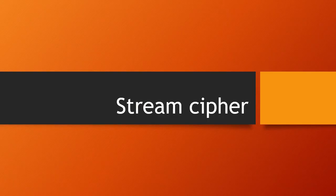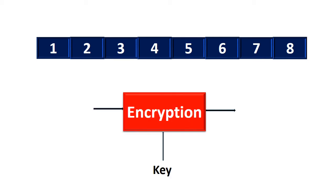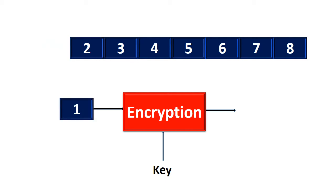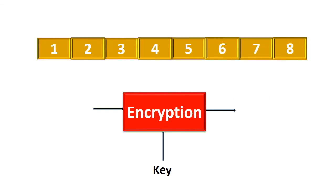Now let's take a look at the stream cipher. In stream cipher, one byte of data is considered for each iteration. Here the blue cells represent eight bits, that is one byte of data. For encrypting a byte, a key stream is generated. The first bit is encrypted, typically by XORing with the key. The encrypted bit is represented in yellow. This is followed by the encryption of all the bits sequentially. Now we have the first byte of data encrypted, represented in yellow. Similarly all the bytes of the plain text are encrypted. So the stream cipher is achieved predominantly by only the confusion process.